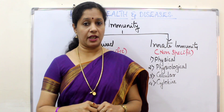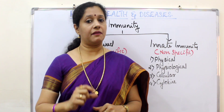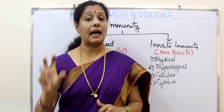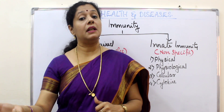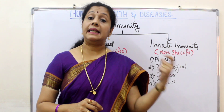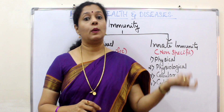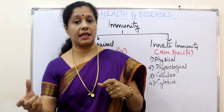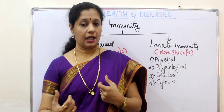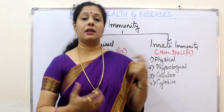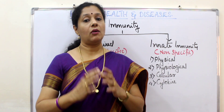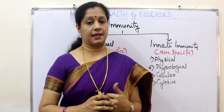Whenever there is an infection, B lymphocytes will produce a protein called antibody, which will fight off the disease. Whereas T lymphocytes will help B lymphocytes to make that antibody — without T's help, B cannot make it. We will learn about them in detail in coming videos, but now I wanted you to understand this.